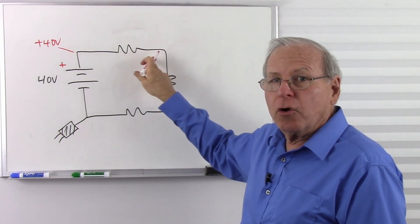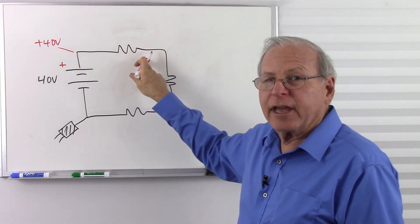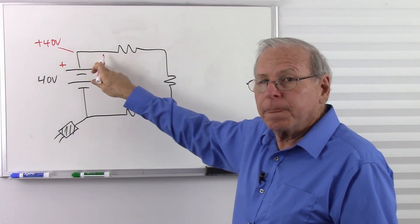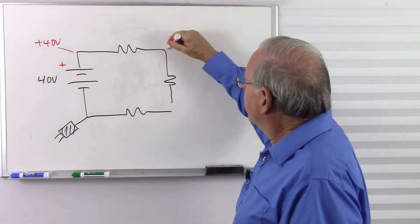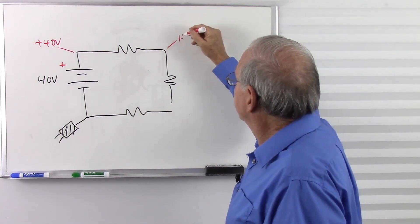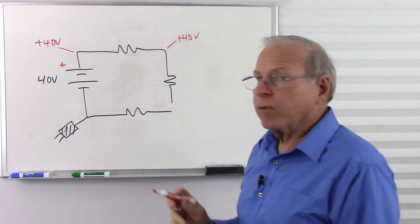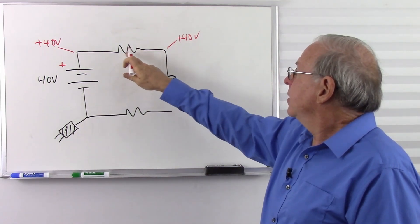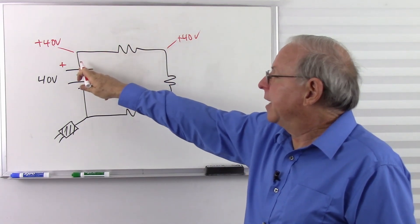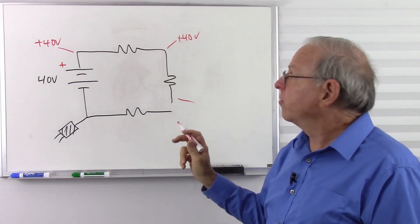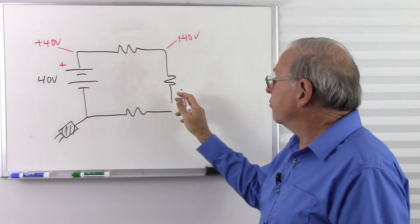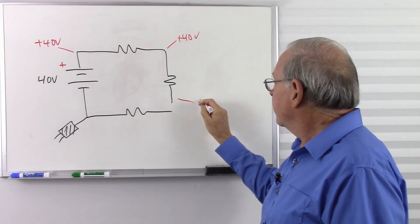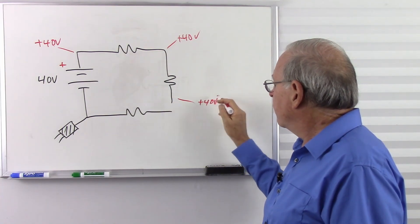Therefore, no current, no voltage difference. The voltage here cannot be different from the voltage here. So whatever voltage I have here, I also have here. So now my red lead is going to measure 40 volts right there. What about here? Well, I'm connected to the battery. I've got two resistors. I don't really care what those resistors are because I know that with no current, I can have no voltage drop. So I'll have 40 volts there.